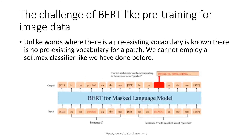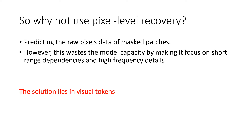Let's dive deeper into the challenge. There are no pre-existing vocabulary for a patch which has been masked out in an image, while for a word it can be found in a dictionary. So why not use pixel-level recording? That is one solution — to predict raw pixel data of the masked patches. However, this method is ineffective as it wastes model capacity by making it focus on short-range dependencies and high-frequency details.